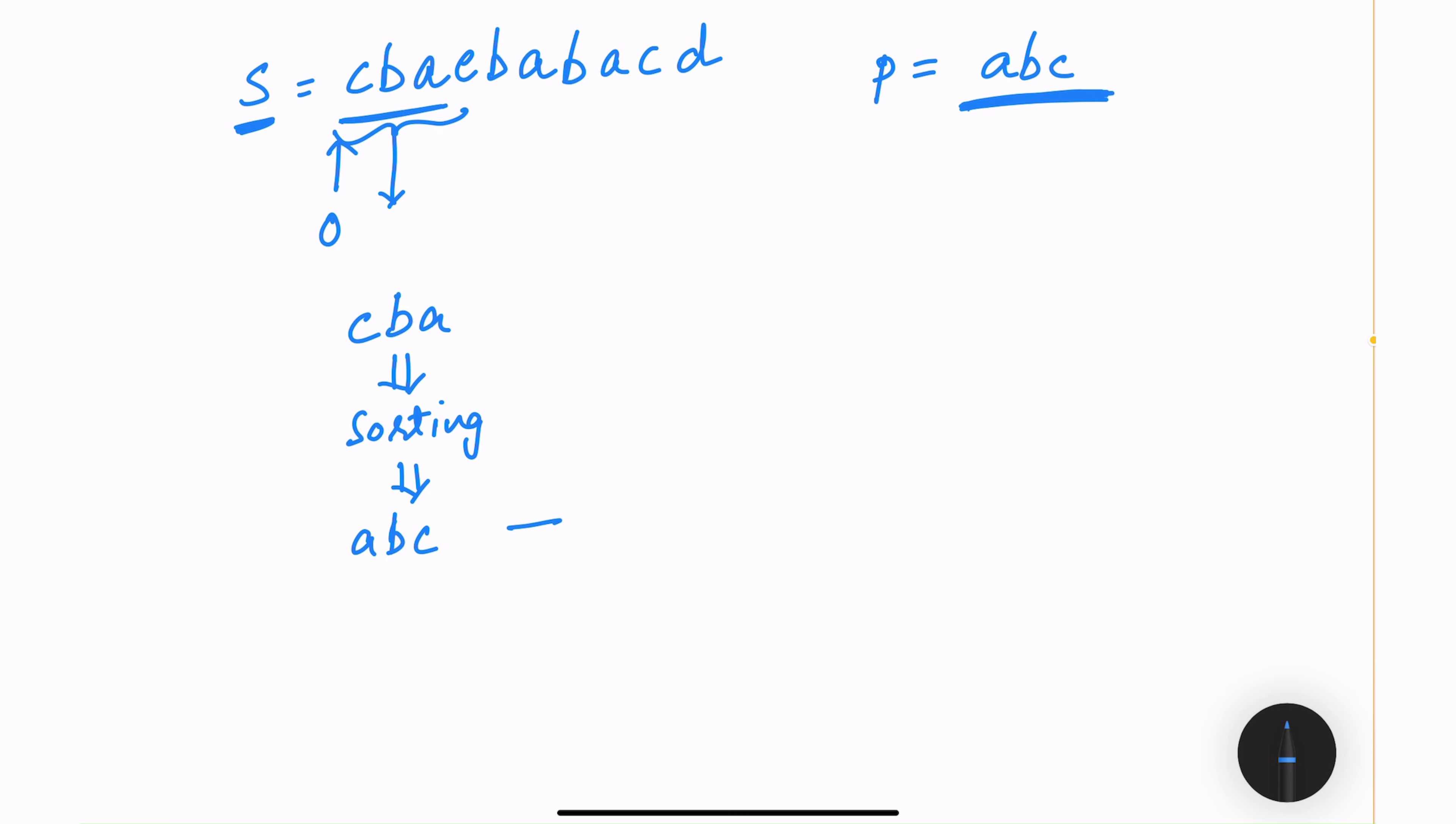And then I will compare it the p string. So for p, I only need to do an order by once because it is a constant string. So after applying sorting, I will get a, b and c. Compare these two strings. If the result is true, I can say this is an anagram. So I will record this index i in my result.